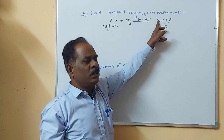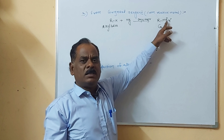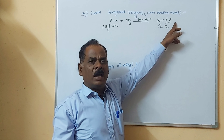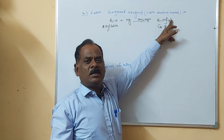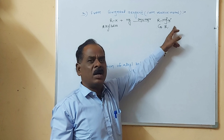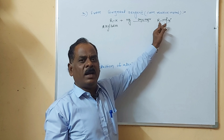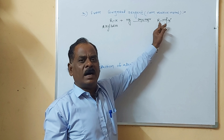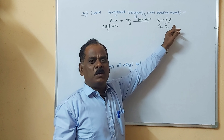In the general formula R-Mg-X: R means the alkyl group, Mg is the magnesium metal, and X is the halogen atom. Magnesium acquires positive charge and X acquires negative charge. Alkyl magnesium halides are called Grignard reagents, written as RMgX. They are prepared when alkyl halide is treated with magnesium metal in dry ether under inert conditions.